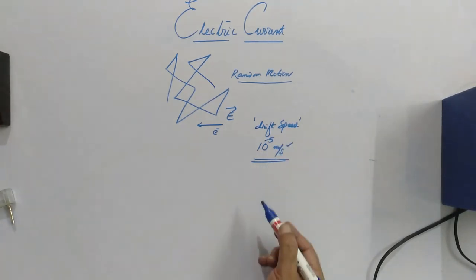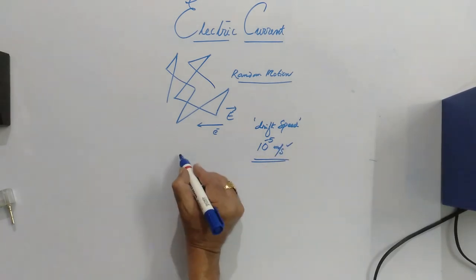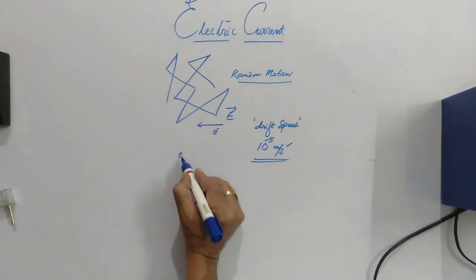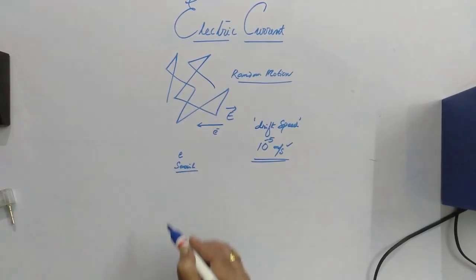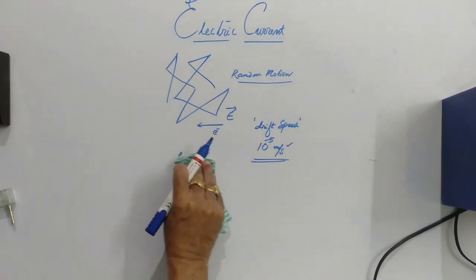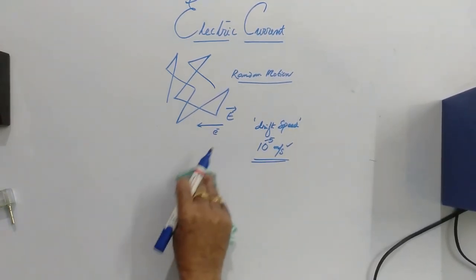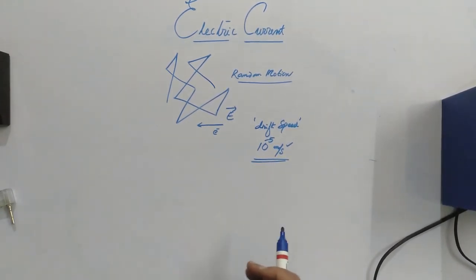10 to the power of minus 5 meter per second. That means if you conduct a race between electron and a snail, the snail will win the race. Because its speed is at least some centimeters per second or some millimeters per second. But here, it takes 1 lakh seconds to reach 1 meter.